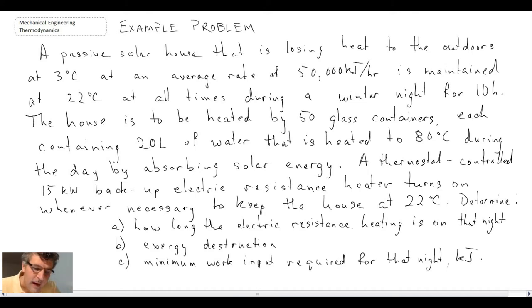So there's the example problem, rather long with a lot of words. We're dealing with a passive solar house that's losing heat to the outdoors at 3°C at an average rate of 50,000 kilojoules per hour. The house itself is maintained at 22°C during a winter night.